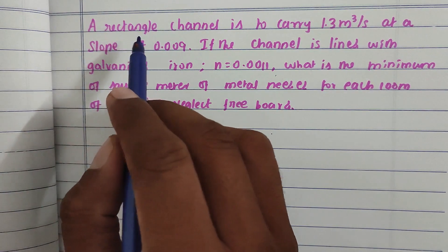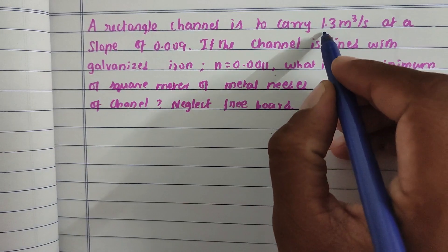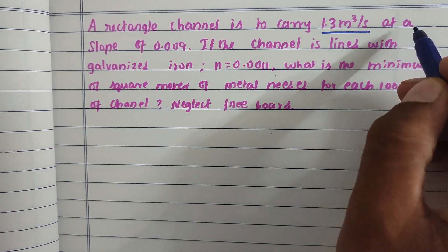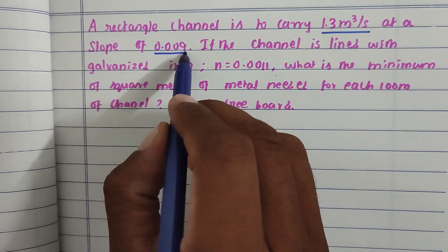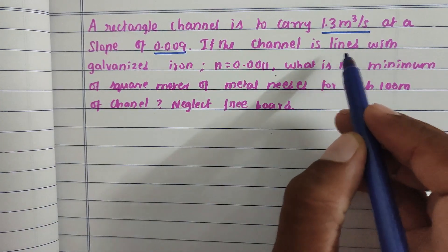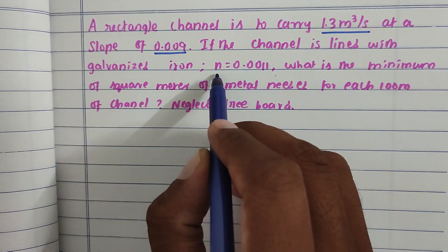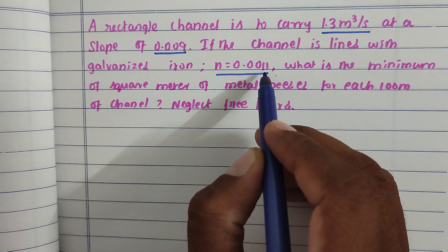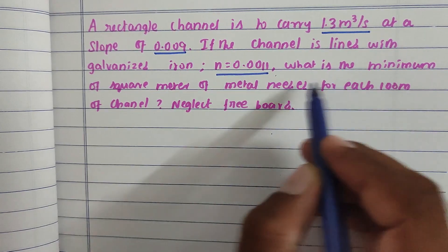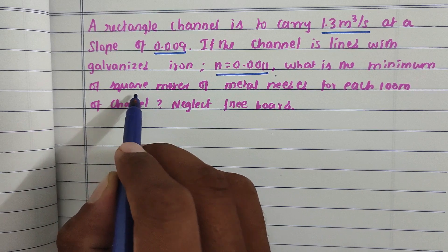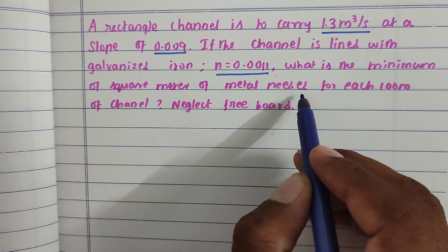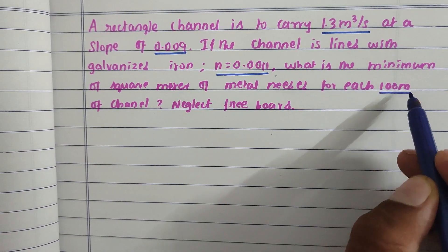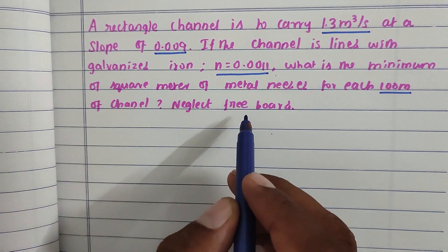The problem is: a rectangular channel is to carry 1.3 cubic meters per second at a slope of 0.009. If the channel is lined with galvanized iron with n equal to 0.011, what is the minimum square meters of metal needed for each 100 meters of channel? Neglect freeboard.